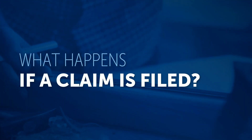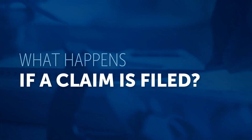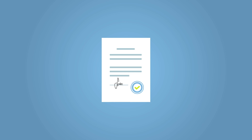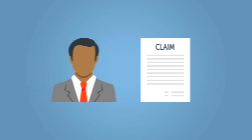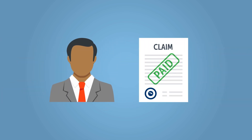What happens if a claim is filed? All contractor license bonds work in the same basic way. If a bonded and licensed contractor breaks the bond's terms, a claim can be made against the bond for compensation. The surety will pay out the claim, if warranted, but the contractor is responsible for paying back the surety in full.